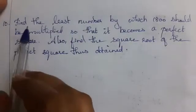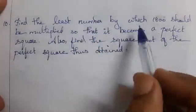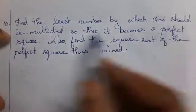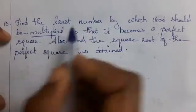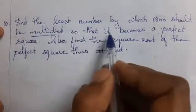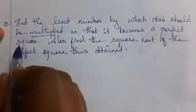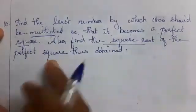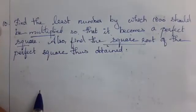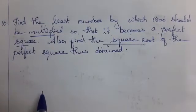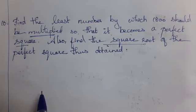See the 10th question: find the least number by which 1,800 should be multiplied so that it becomes a perfect square. Find the square root of the perfect square. This is the last question. If you need to multiply, you must factorize. The remainder must be subtracted.